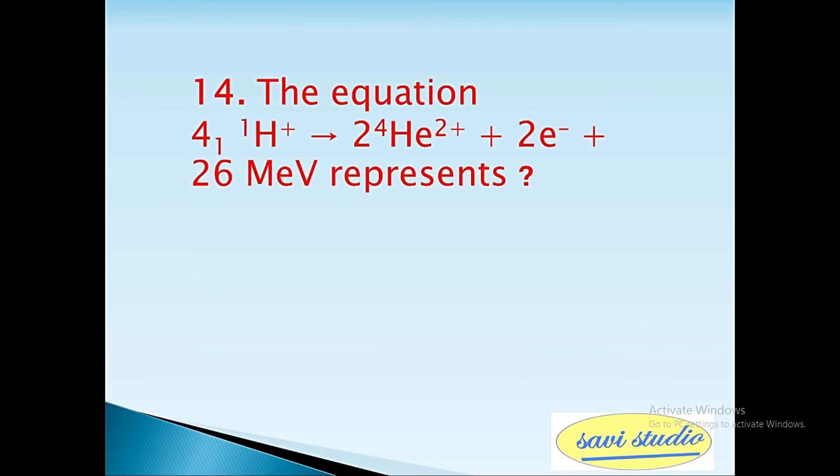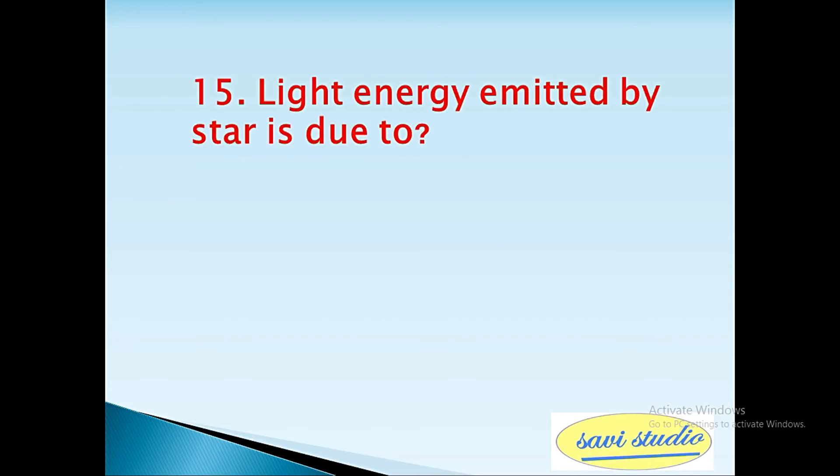14th question: The equation 4 subscript 1 1 H plus arrow 2 power 4 He 2 2 plus plus 2 e minus plus 26 MeV represents? Answer: fusion. Question 15: Light energy emitted by stars is due to? Answer: fusion reaction of hydrogen atoms.